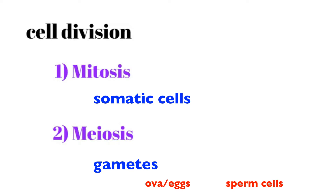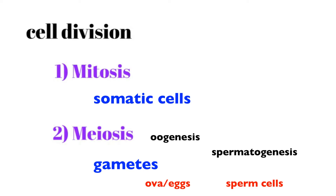In females, meiosis is known as oogenesis. In males, meiosis is known as spermatogenesis. It's the same basic process of producing those male and female gametes — sperm cells are the male gametes, ova are the female gametes. The process is roughly the same, but the timing is dramatically different, and we'll touch on that.